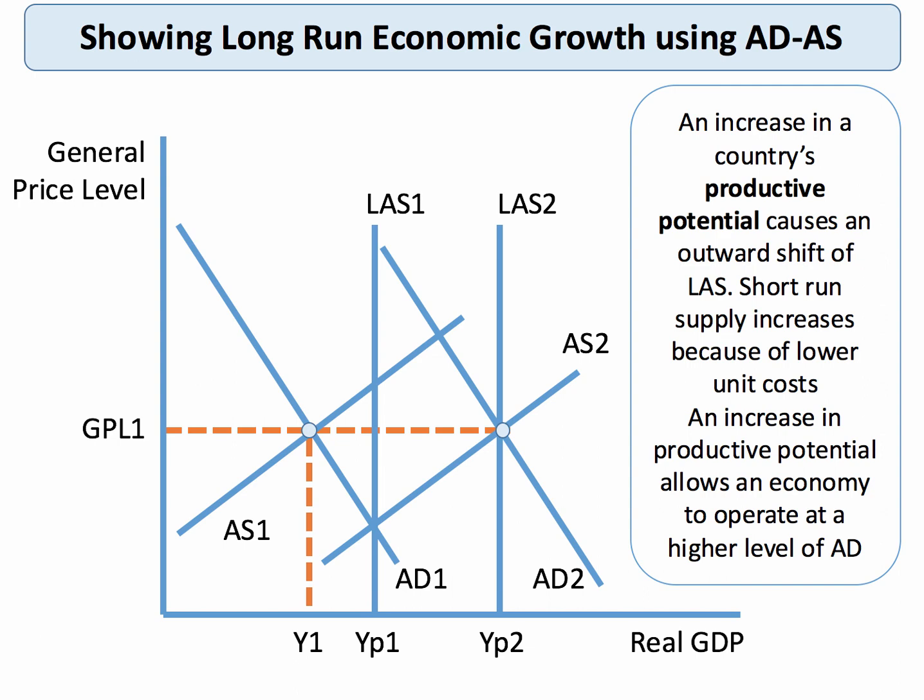One way of showing an improvement in the supply side is using ADAS analysis. In this diagram, long-run aggregate supply and short-run aggregate supply have both shifted out, allowing the economy to operate with a higher level of demand. You can see the economy operating in equilibrium at YP2 with a given level of demand AD2 without necessarily causing inflation. This shows supply-side policies achieving non-inflationary growth.